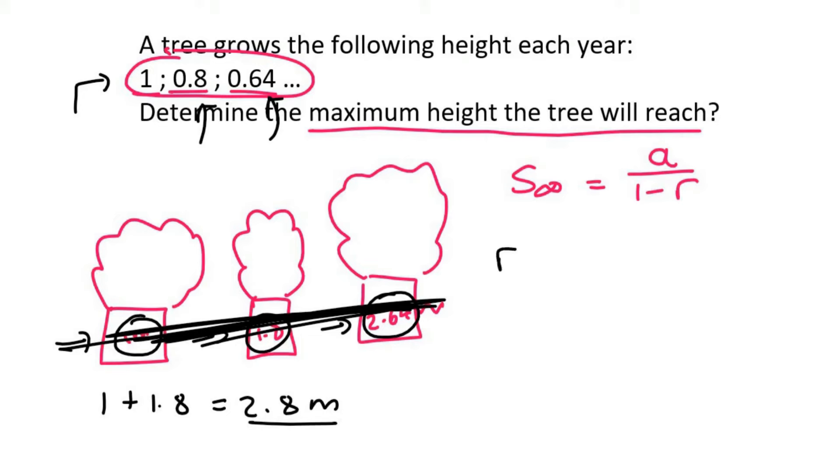So we need to work out r. r, you can work out as t2 over t1, which is going to be 0.8 over 1, which is 0.8. Let's just make sure that the ratio stays constant. So we can also try t3 over t2, which is 0.64 over 0.8, and that actually does give us 0.8.